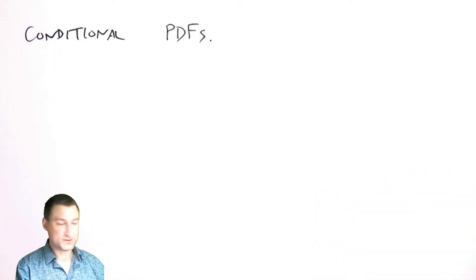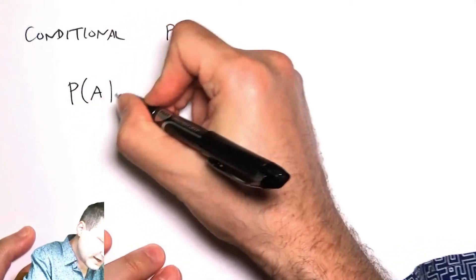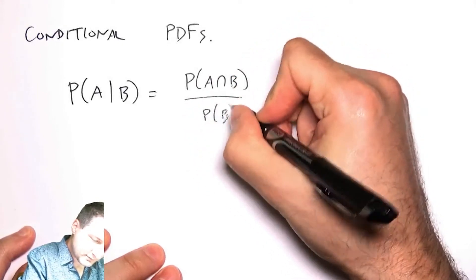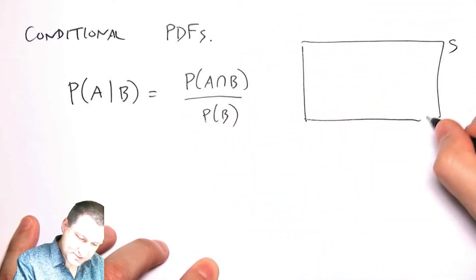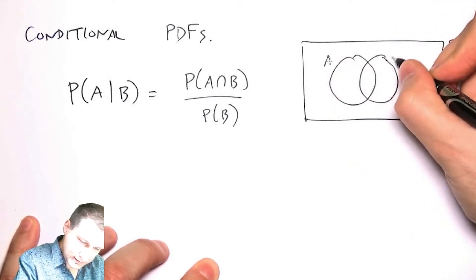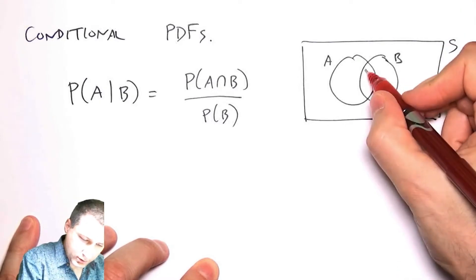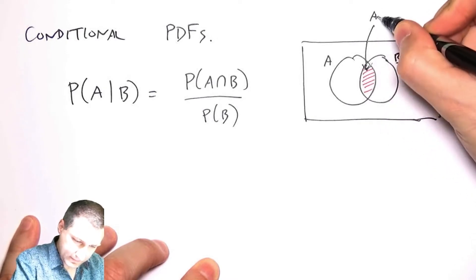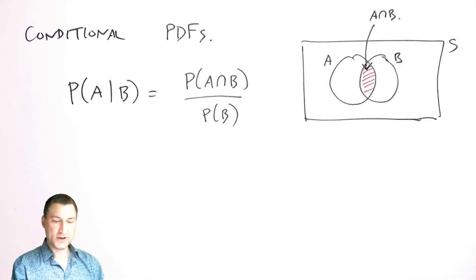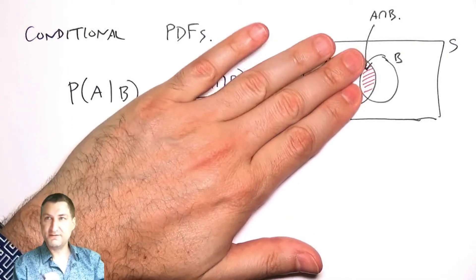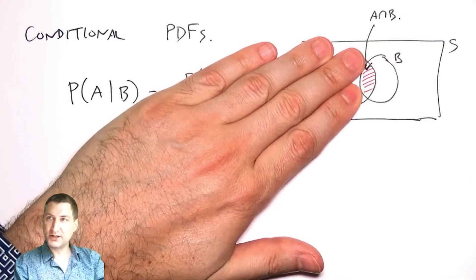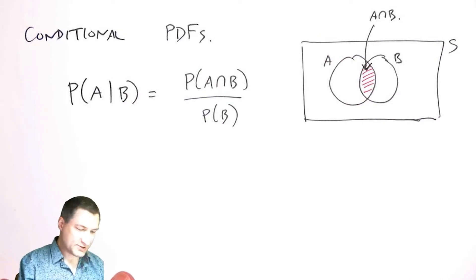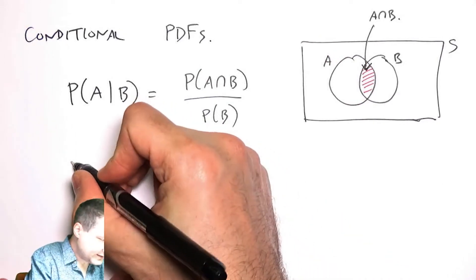We started talking about conditional probability as one of the very first concepts in probability. We talked about the probability of A given B, which was defined with the sample space, event A and event B. This is like saying: I told you that B happened, so now I'm confining my world to that sample space. The probability of A given B is basically how much is in the intersection over the probability of B happening.